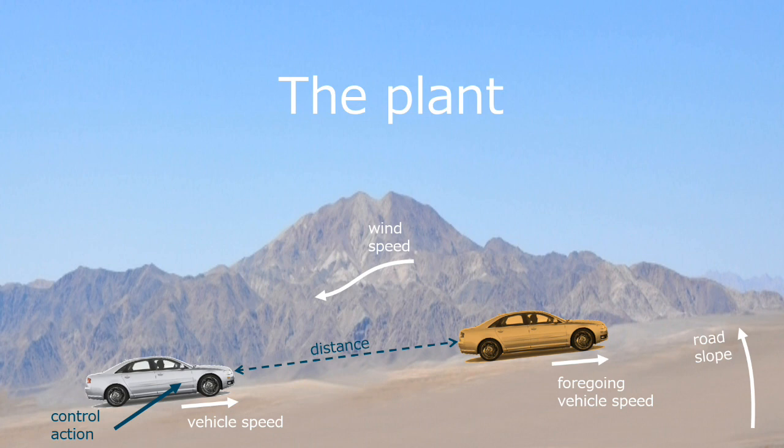Let's take a quick look at the plant and the consideration. I remind you the goal of keeping the distance between the two vehicles, despite the disturbances on wind speed, road slope, and foregoing vehicle speed.